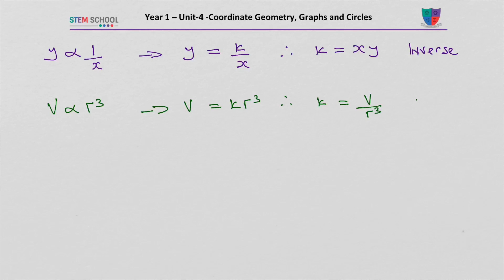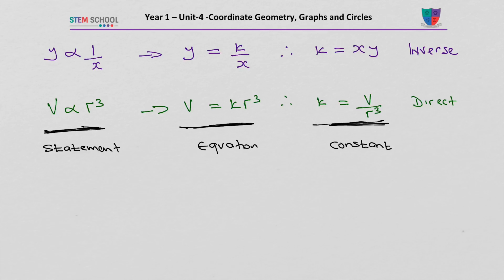That is direct proportionality. Here, this is the proportionality statement. You translate that into a proportionality equation by changing the proportionality sign into equals k, and then you find the proportionality constant k.